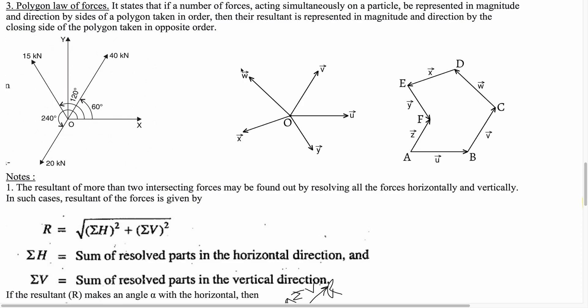Polygon law of forces is used to find the resultant force when there are more than two forces acting on a particle or body. For example, if five forces X, Y, U, V, W act on a particle, and the number of forces is more than two, then the polygon law of forces is applied.